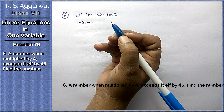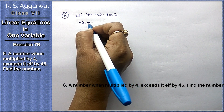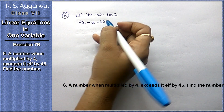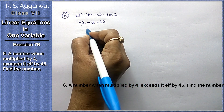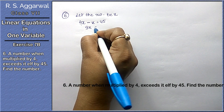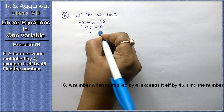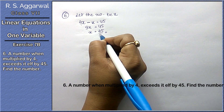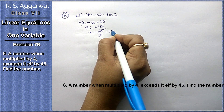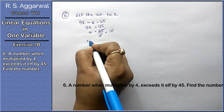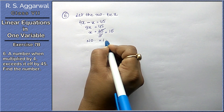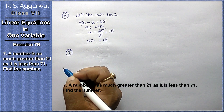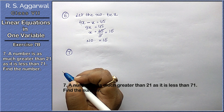So 4x minus x equals 45, which gives 3x equals 45. Therefore x equals 45 divided by 3, which is 15. Hence the number is 15.